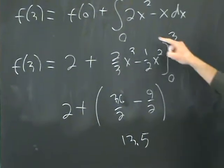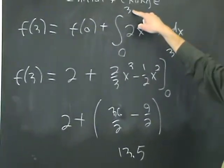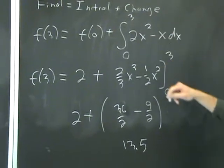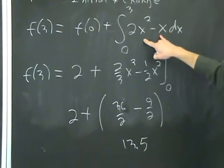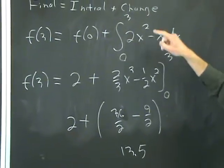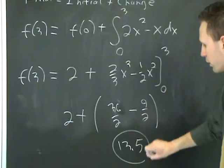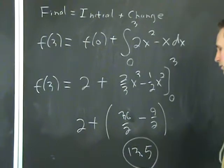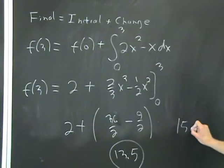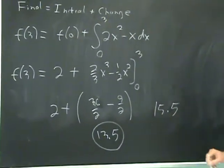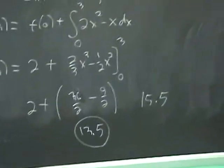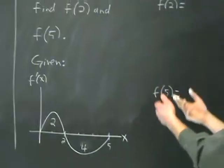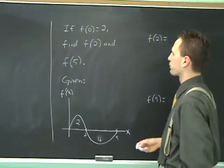Which says that, all right, from t equals 0 to t equals 3, or from x is 0 to x is 3, because this was the rate of change of f, f underwent a total change of 13.5. When you add that to the original, you get the final value of 15.5.